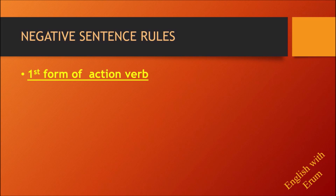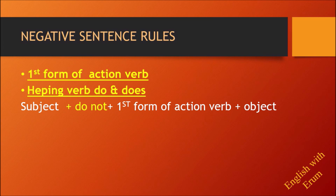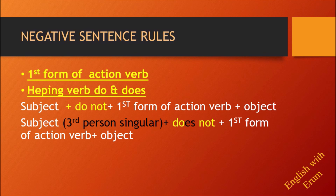Next we go to negative sentence rules. In a negative sentence, the first form of the action verb is used — same as simple present tense. In a simple affirmative sentence there is no helping verb, just the 's' or 'es' addition. But in a negative sentence, helping verbs 'do' and 'does' are used. The structure is: subject plus 'do not' or 'does not' plus first form of action verb plus object. For third person singular, use 'does not'.